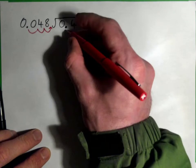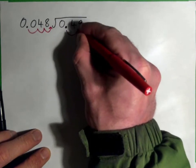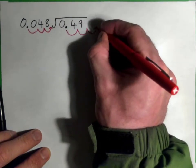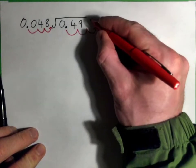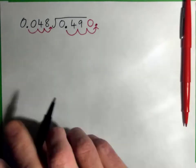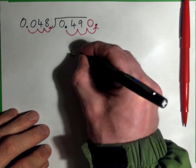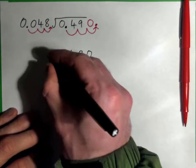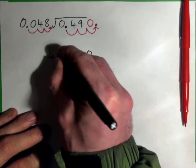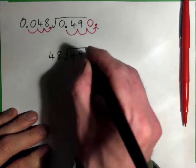If we do that, we must also move this decimal point one, two, three spots to the right and put it here. But notice that we need to put a zero in here because this number becomes 490. So when this goes three spots to the right, this becomes 48. So we have 48 into 490.